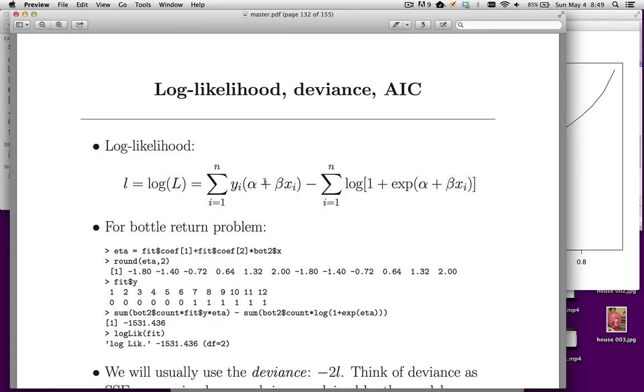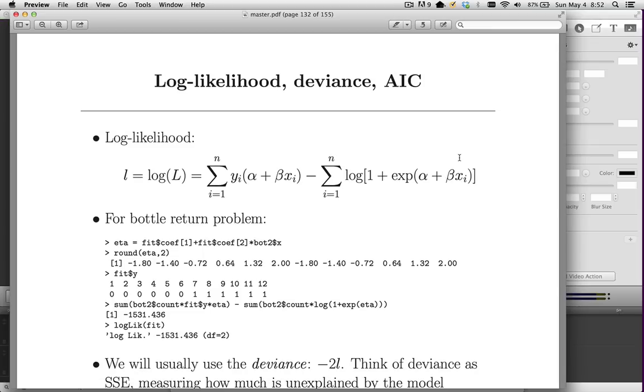So just like we minimize the sum of squared errors with logistic regression, we want to make this as big as possible. Now, this likelihood expression plays exactly the same role as the sum of squared errors in the sense that that is the objective function value. So let's go back to the bottle return problem that we did in a previous video.